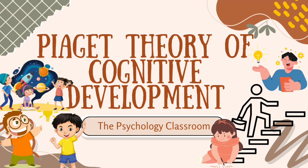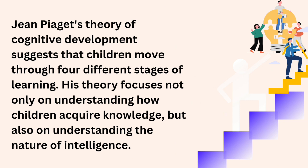Jean Piaget's theory of cognitive development suggests that children move through four different stages of learning. His theory focuses not only on understanding how children acquire knowledge, but also on understanding the nature of intelligence.